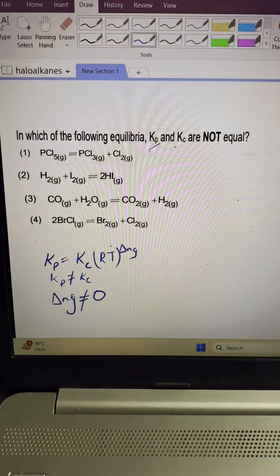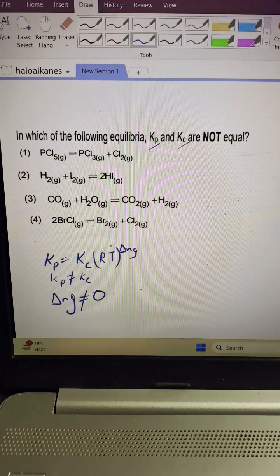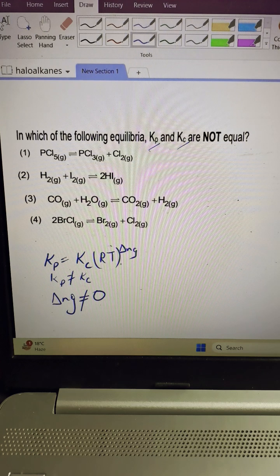Kp is the equilibrium constant of pressure, Kc is the equilibrium constant. How are they related? They are related with the formula Kp equals Kc times RT raised to power delta Ng.